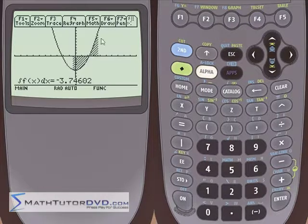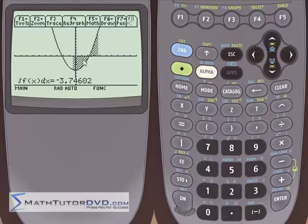So this is a negative area. This is a positive area. And you just add them together.